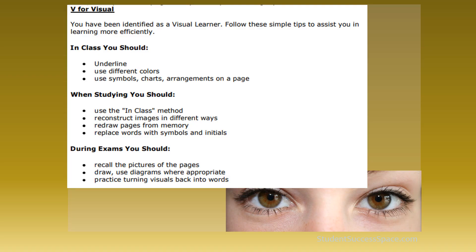For visual learners, in class you may want to try underlining using different colors, symbols, charts, and arrangements on a page — even doodle or draw. When studying, reconstruct ideas and use those same in-class methods. Redraw pages from memory or replace words with symbols and initials. During an exam, think about what the pictures looked like on the page: how did you mark it, what colors did you use, what charts did you have? Draw diagrams in the margin and practice turning your visuals back into words.